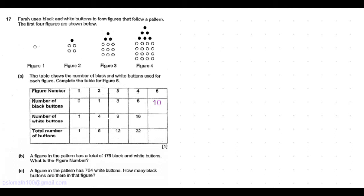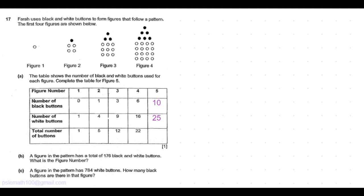Now coming to the number of white buttons. Pattern 1 has 1 white button. Pattern 2 has 4. Pattern 3 has 9, which is 3 times 3. Pattern 4 has 16, which is 4 times 4. So these are basically square numbers. So pattern 5 is 5 times 5, which is 25.